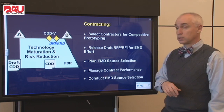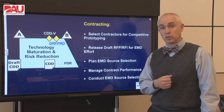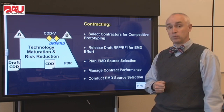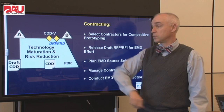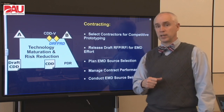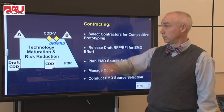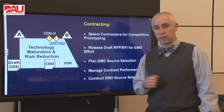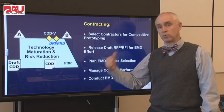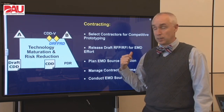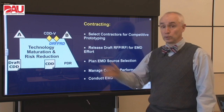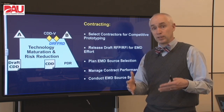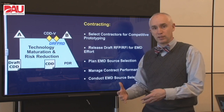We also want to manage the contract performance on those competitive prototyping contracts we let. And when we do get the decision to release the RFP, they're going to conduct that source selection and get it done prior to Milestone B so that as soon as we get a good Milestone B decision, we can go ahead and award those contracts for the next phase. Like every other acquisition career field that contributes to this, they're really spending this phase getting ready for success in the next phase as well.